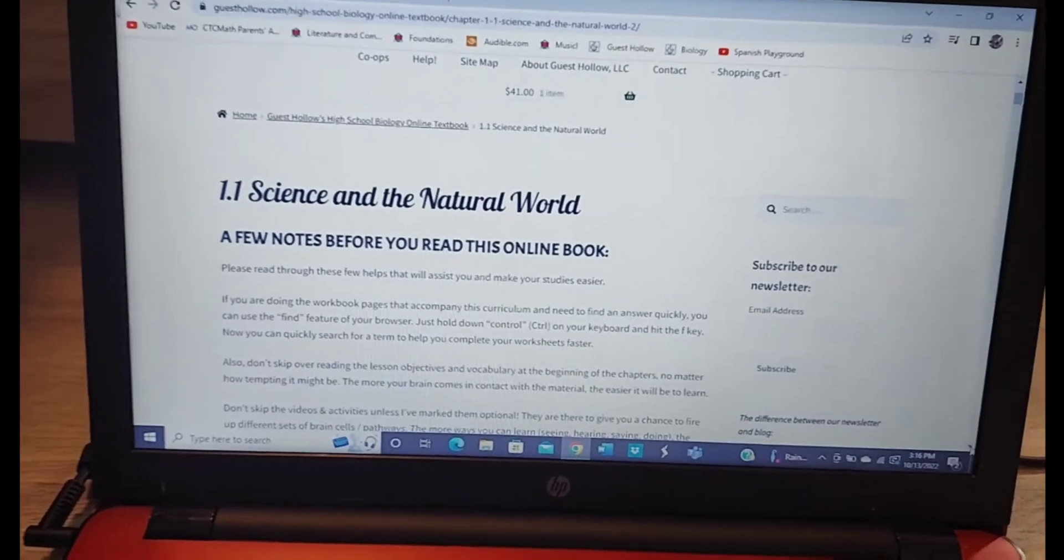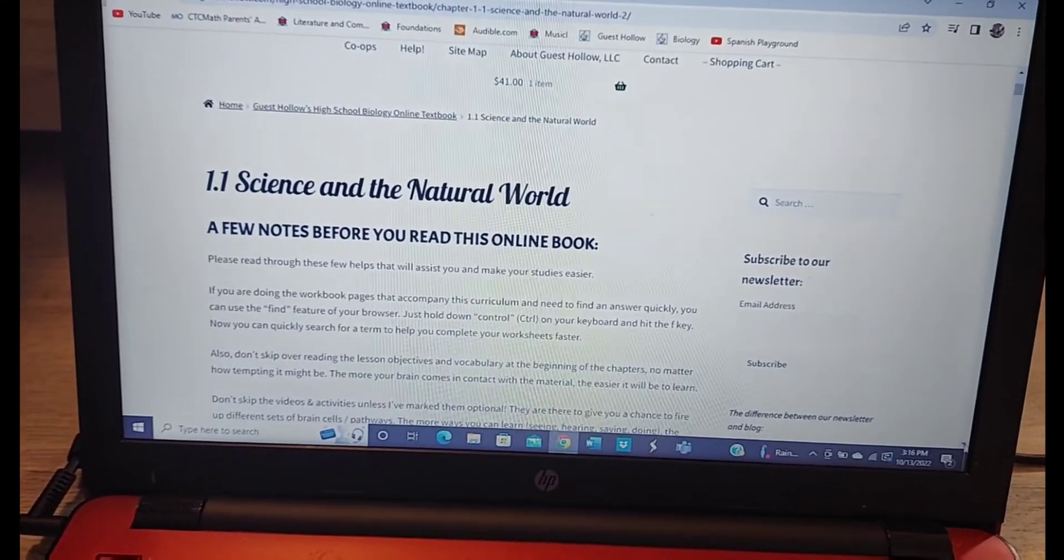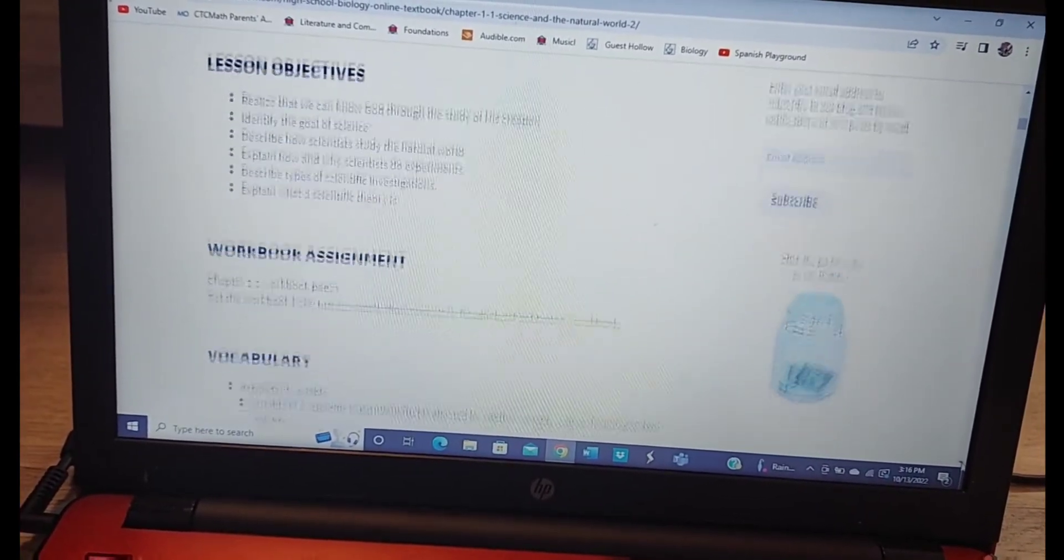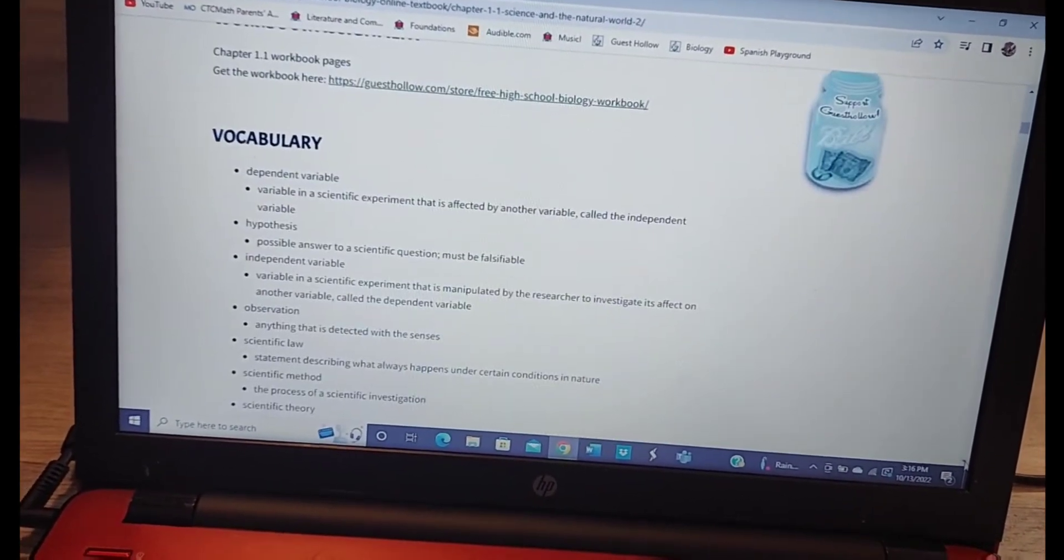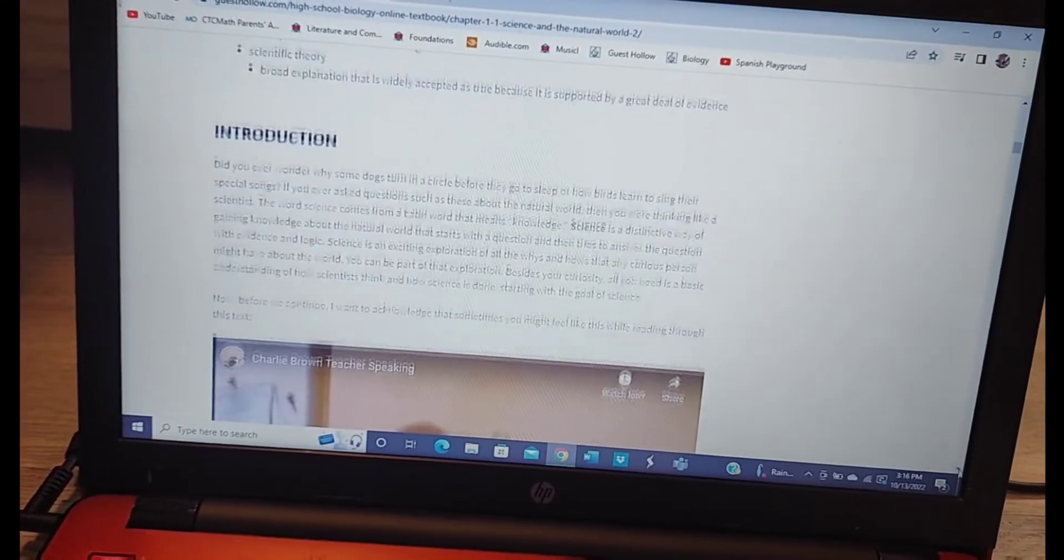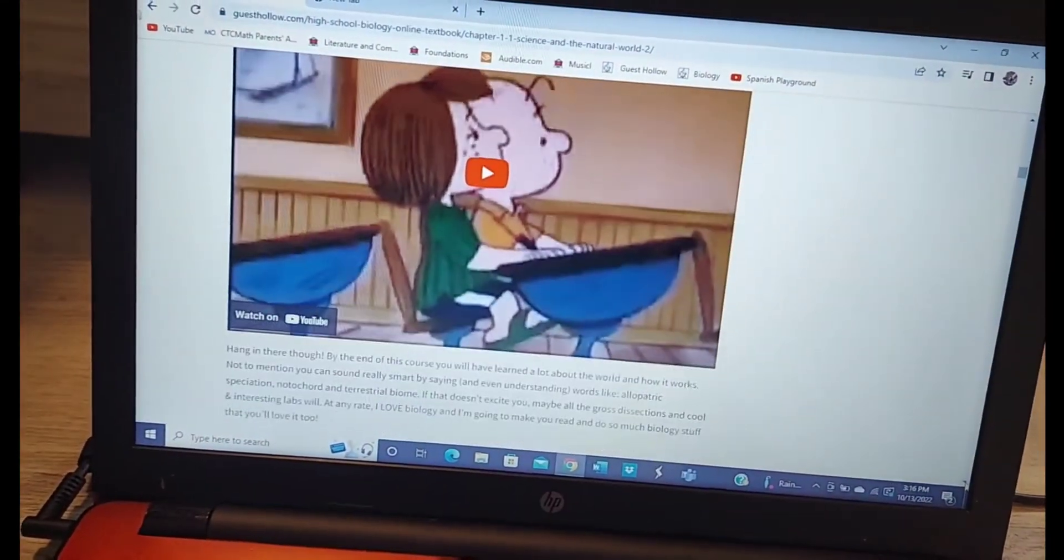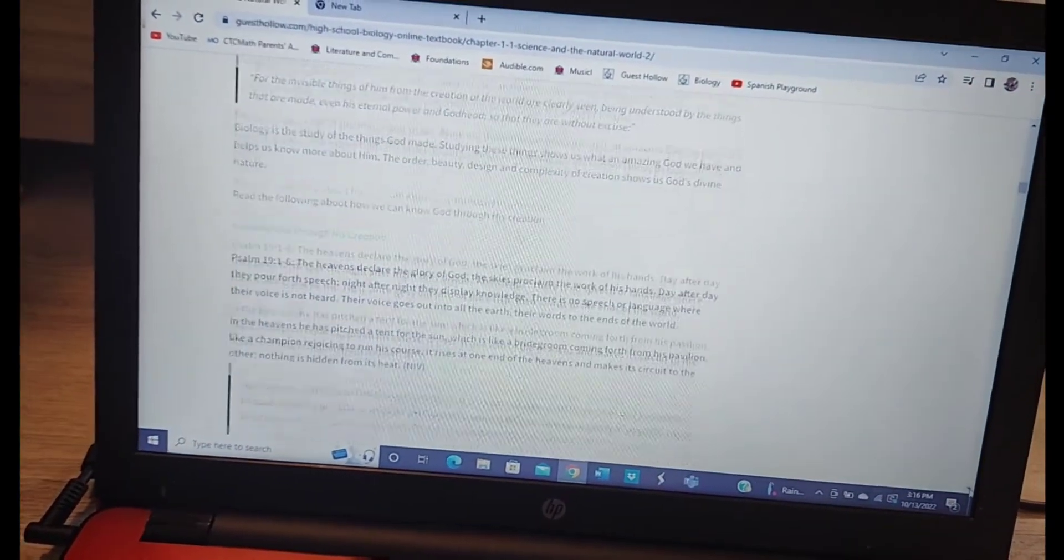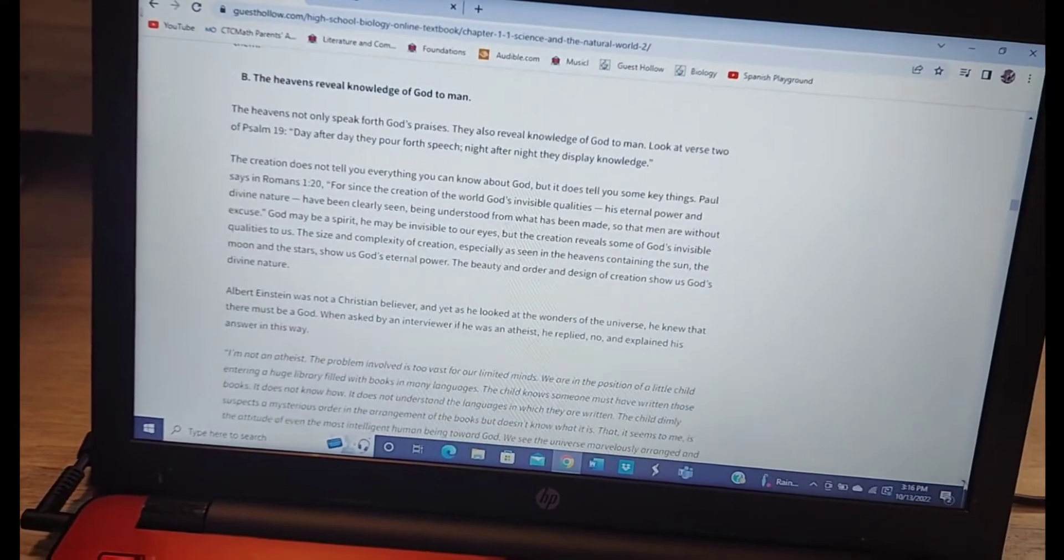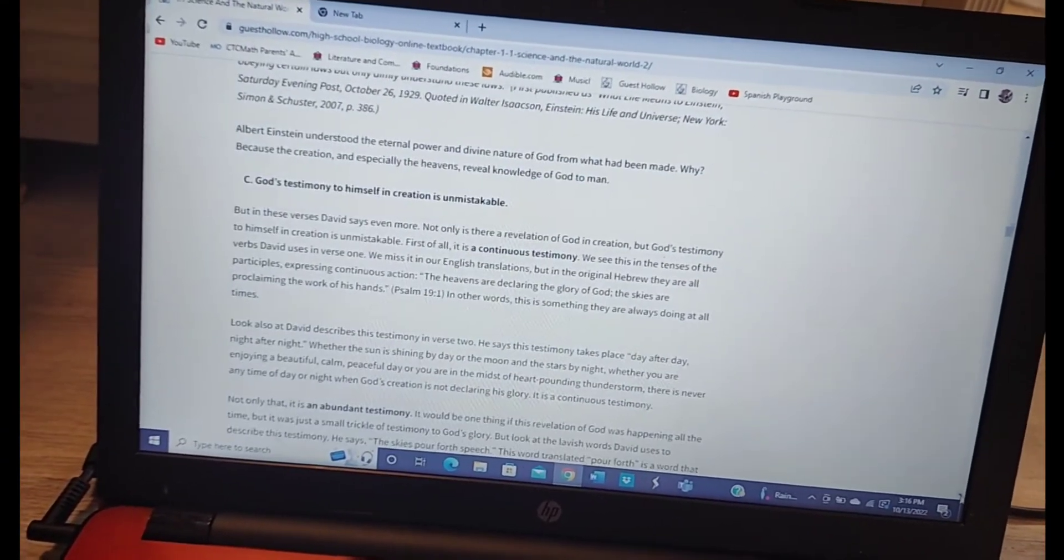So this is how the online spine looks. This is the 1.1 which is one of the first lessons. There's usually vocab words at the very beginning which coordinate with the worksheets. And then there's videos embedded throughout the whole thing that your child will watch while they're reading which my son loves the videos. And that's pretty much it for the online spine.